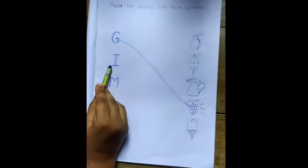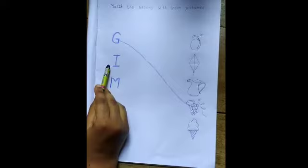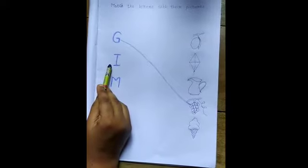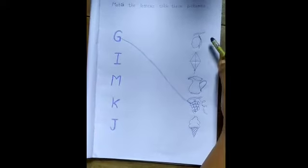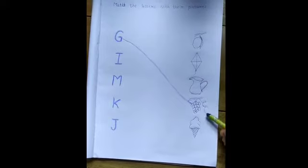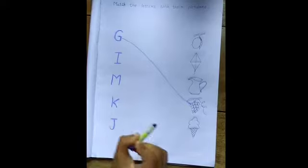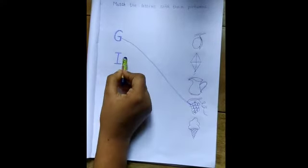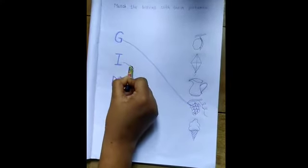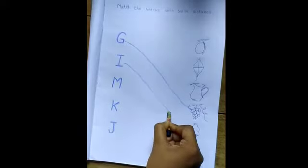Now, this is letter I. I for what? Yes, I for ice cream. Can you find the picture of ice cream? Yes, this one. Ice cream. Now, match it with letter I. I for ice cream.